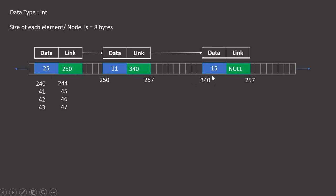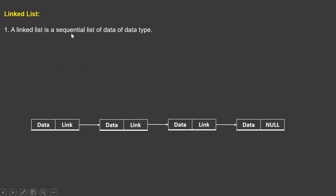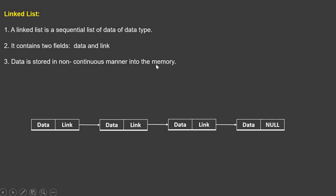I took eight bytes: four for the data and four for the address. I store the next node's address in the link field, so the third element is also linked. The last element points to null, meaning no other element. If I add more elements, I simply write the address of the next element and get space for it. This is how data is stored in a sequential manner but in non-contiguous memory locations. A linked list is a sequential list of data of the same data type, but it contains two fields — data and link — and data is stored in non-contiguous memory.